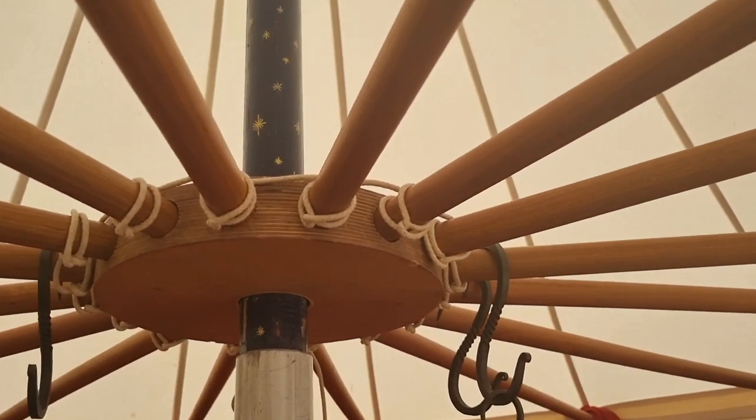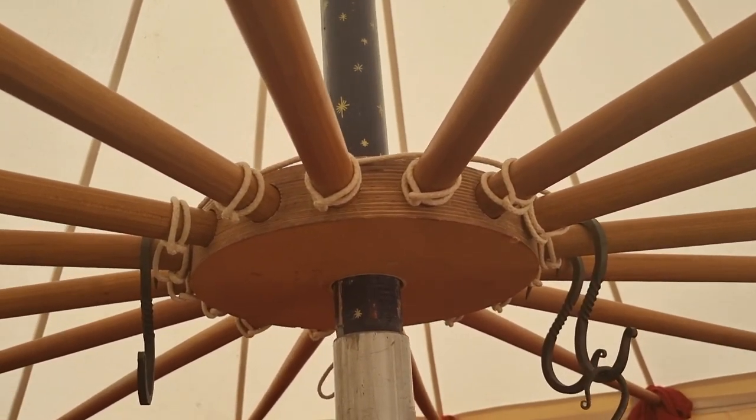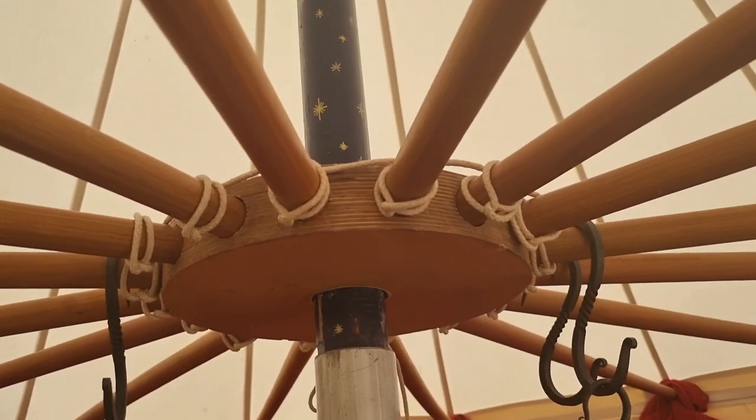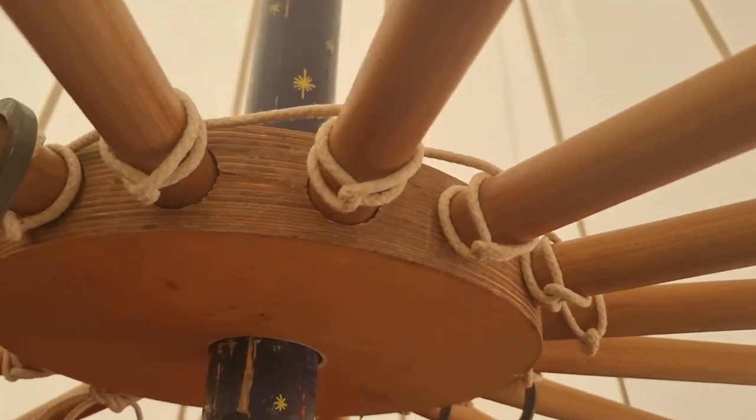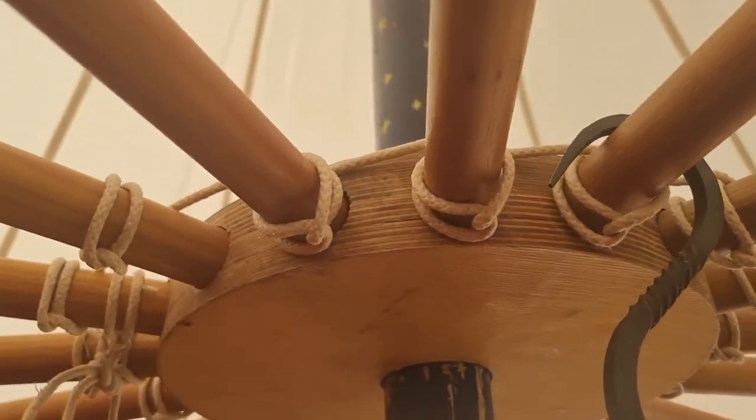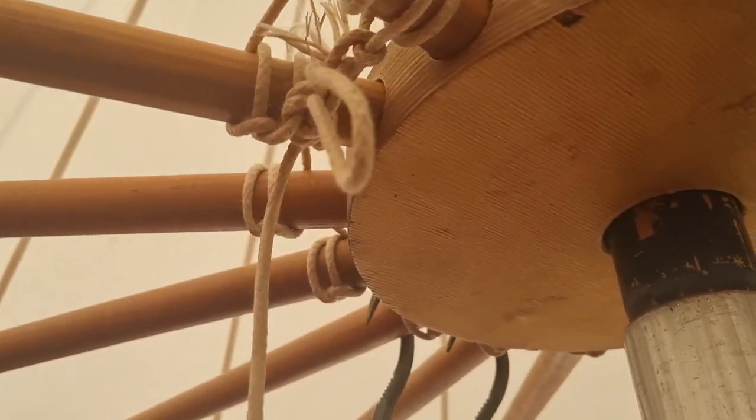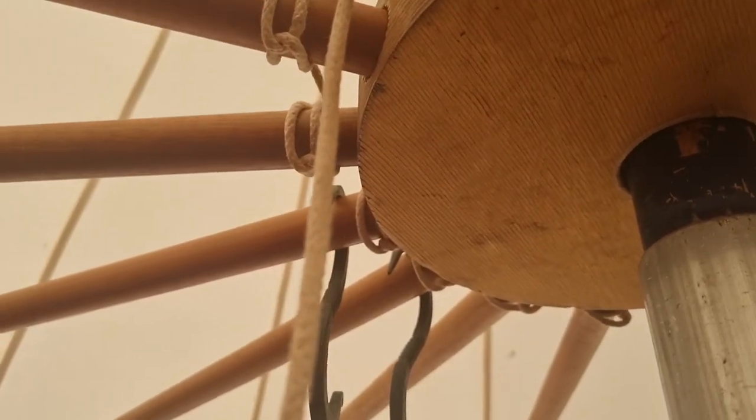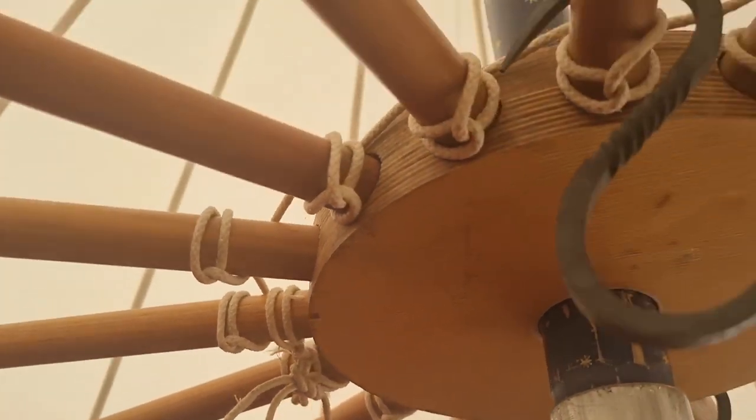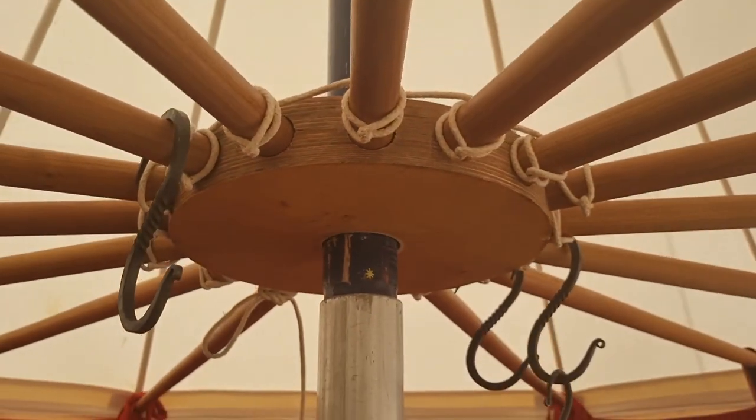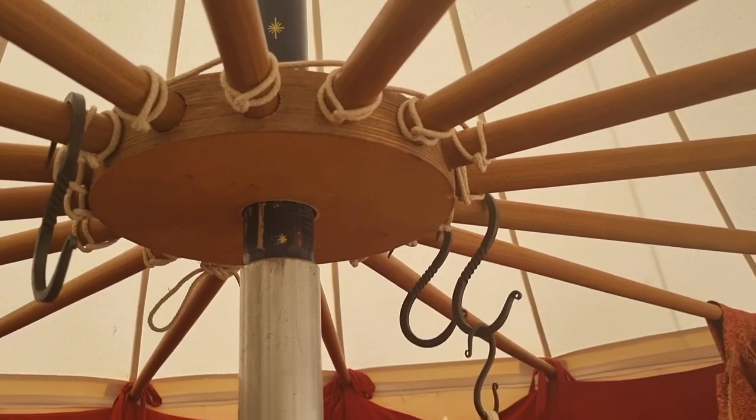You can pin them in but the problem with that is if the tent ever comes down it can break the spokes. This is a slightly sneakier way so they're roped to each other. So if one does pull out and drop out the rope and the other spokes hold it up so you can easily pop it back in but it also means that you don't get hit in the head, they don't fly down and it just hangs there until you can put them back in.